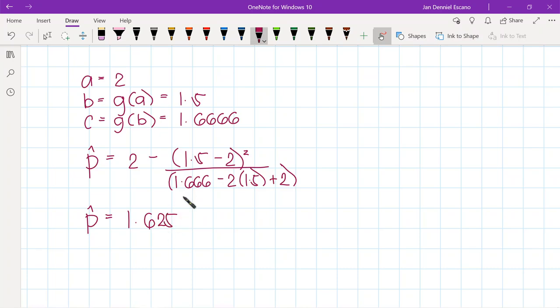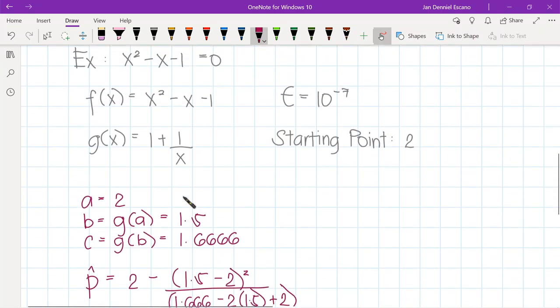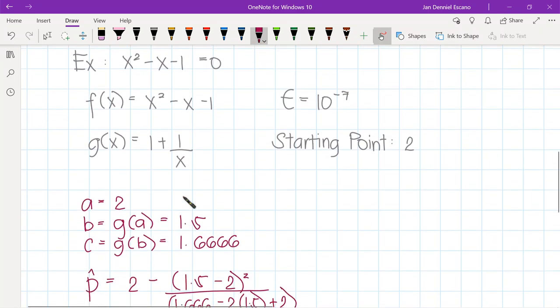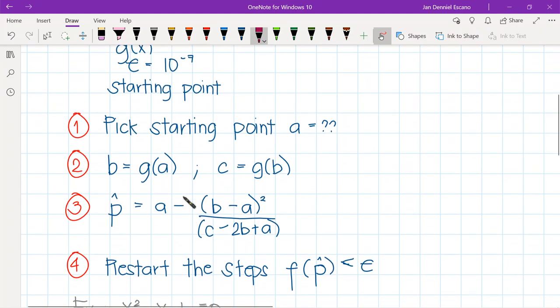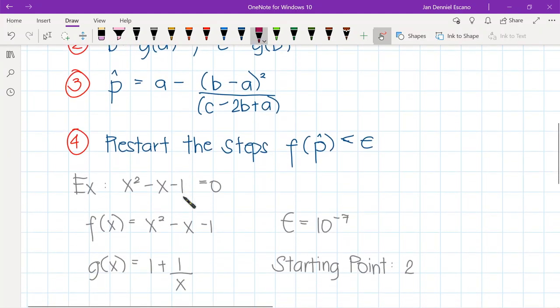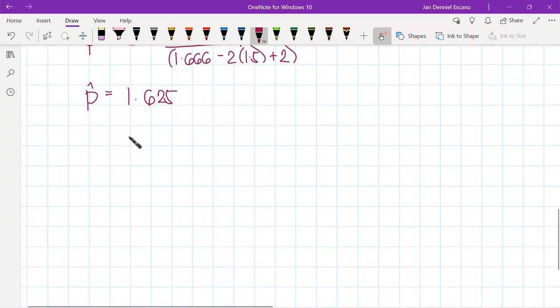And then according to our steps, we just restart the steps until f of p hat is equal to the error. So we set this as the new value of a. This is the new value of a, so we say that a now is 1.625.